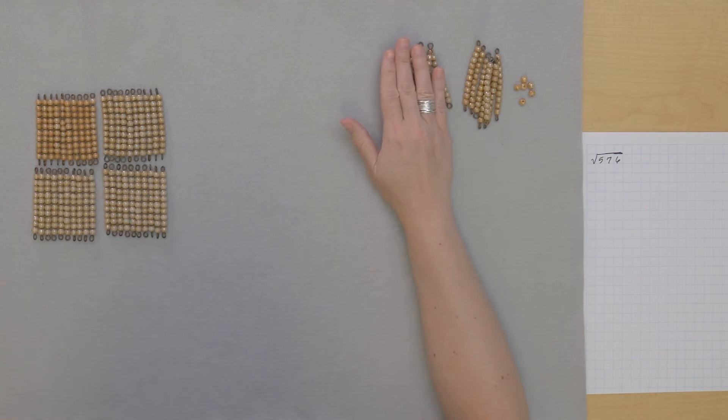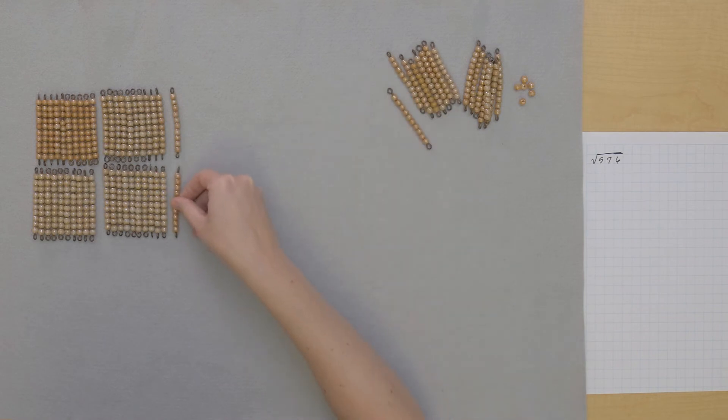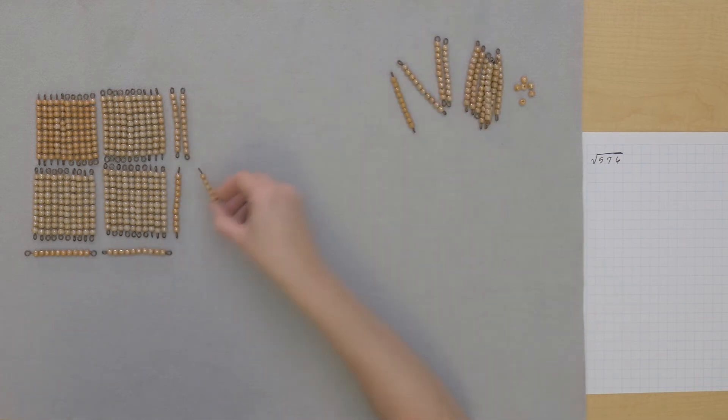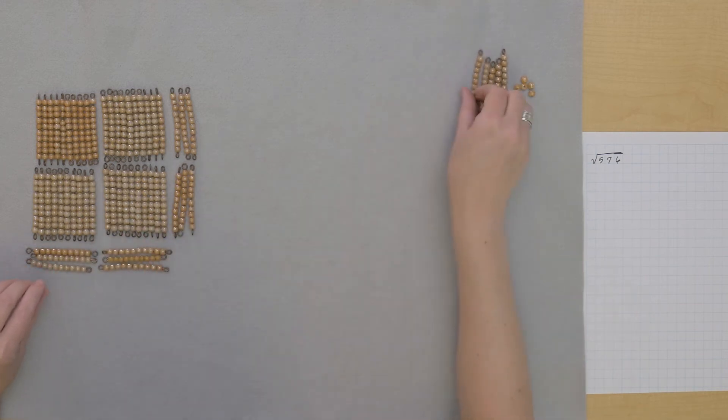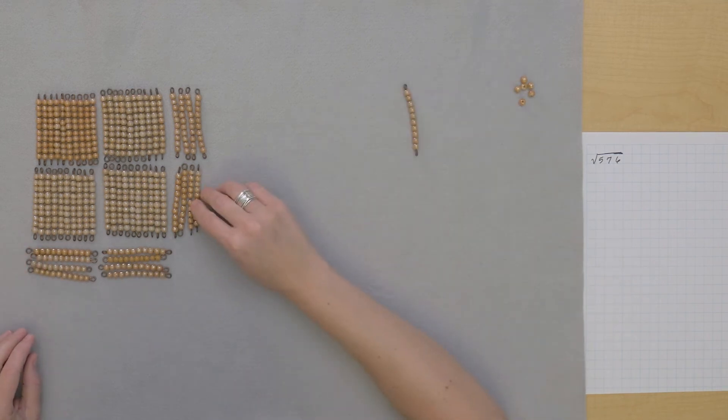And now I can use my tens to keep building the square. Watch. So I have this one ten left, but I could exchange that for units.